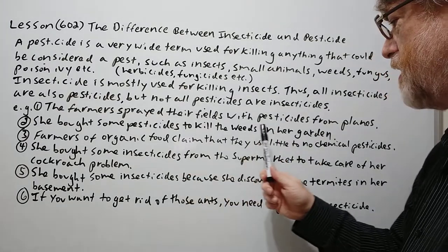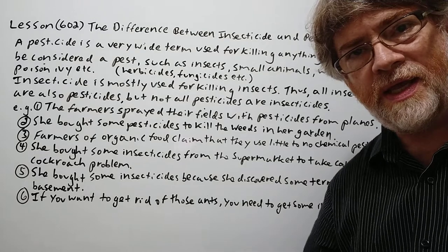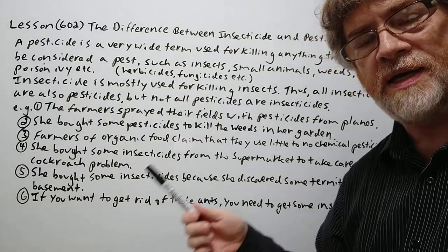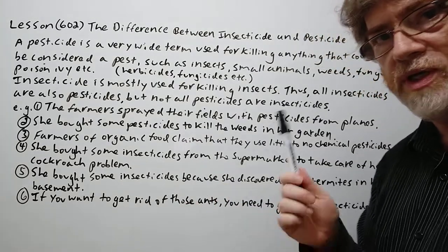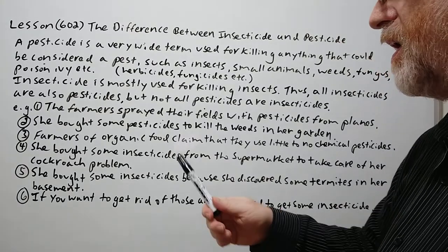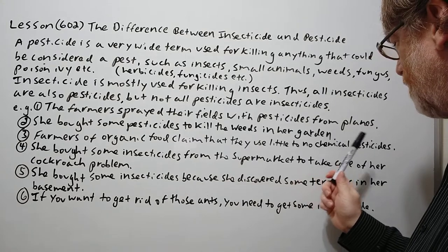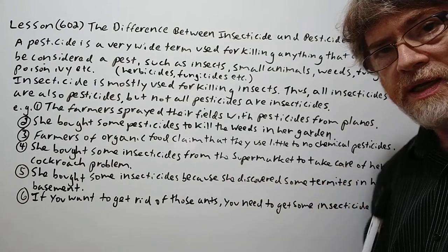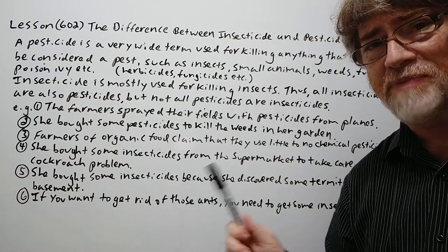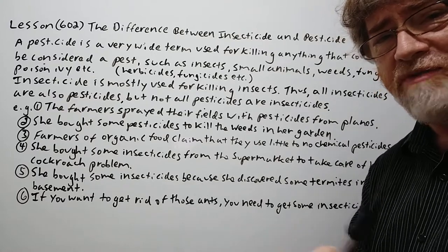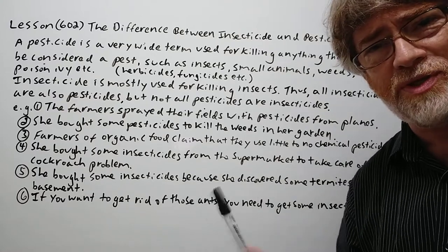Second example: She bought some pesticides to kill the weeds in her garden. Anything in the herbicide category is also a pesticide. Third example: Farmers of organic food claim that they use little to no chemical pesticides. Even though they do try to use some pesticides — if you have no pesticides, your crop will be almost completely destroyed — but they don't use the chemical ones.